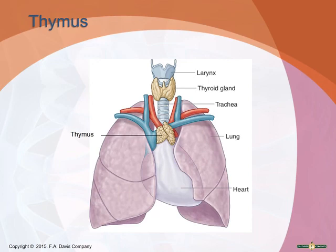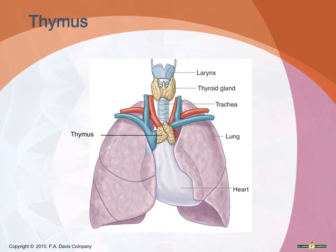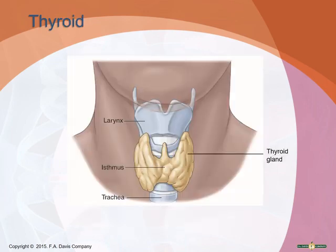The thymus gland lies in the mediastinum just beneath the sternum. In children it is quite large, but it starts to shrink at puberty, and by adulthood it is mostly fat and fibrous tissue. The thymus secretes thymosin and thymopoietin, which have a role in the development of the immune system. Because it secretes hormones it's part of the endocrine system, but its hormone actions also make it part of the immune system.